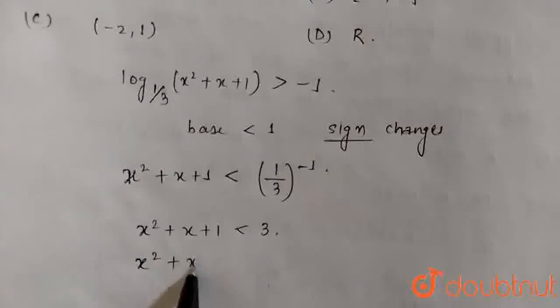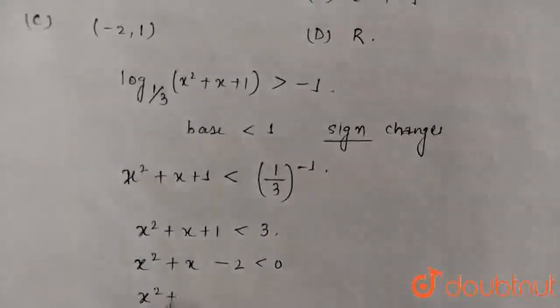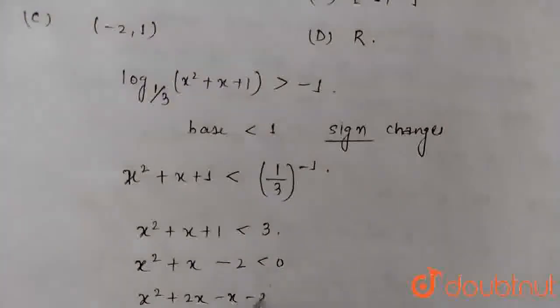So we can write x² + x - 2 less than 0. Or we can write x² + 2x - x - 2 less than 0.